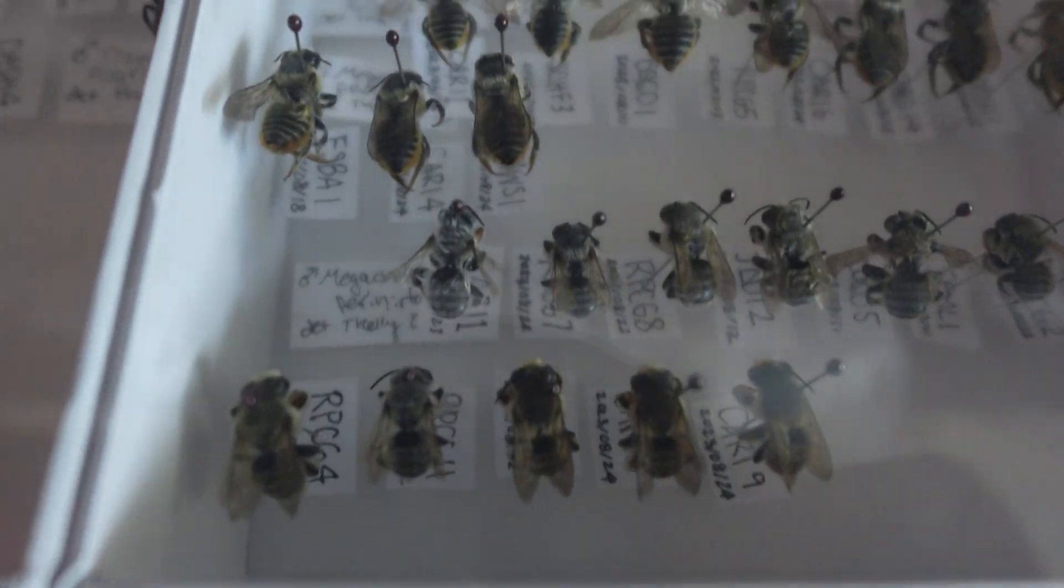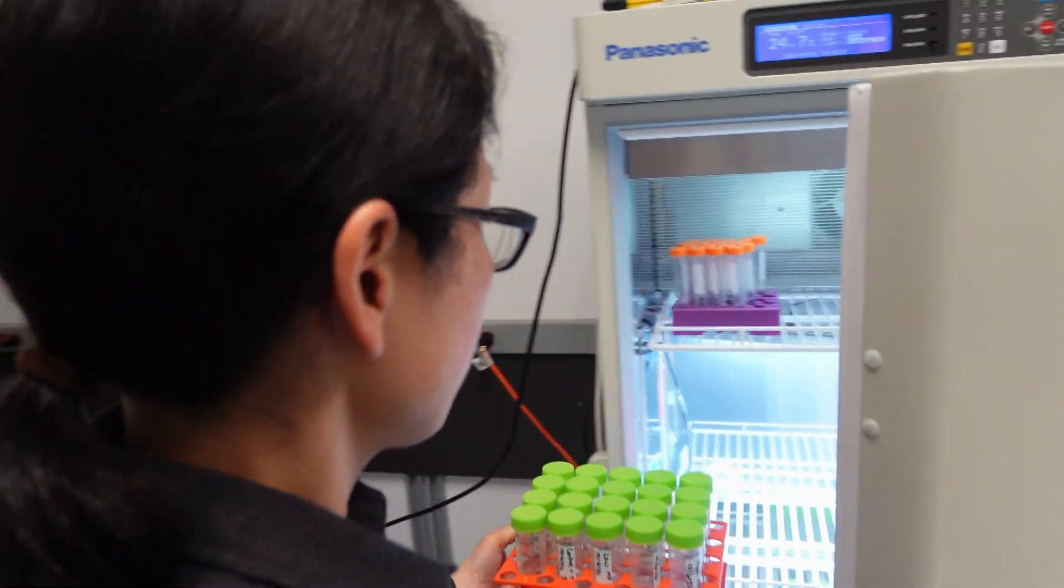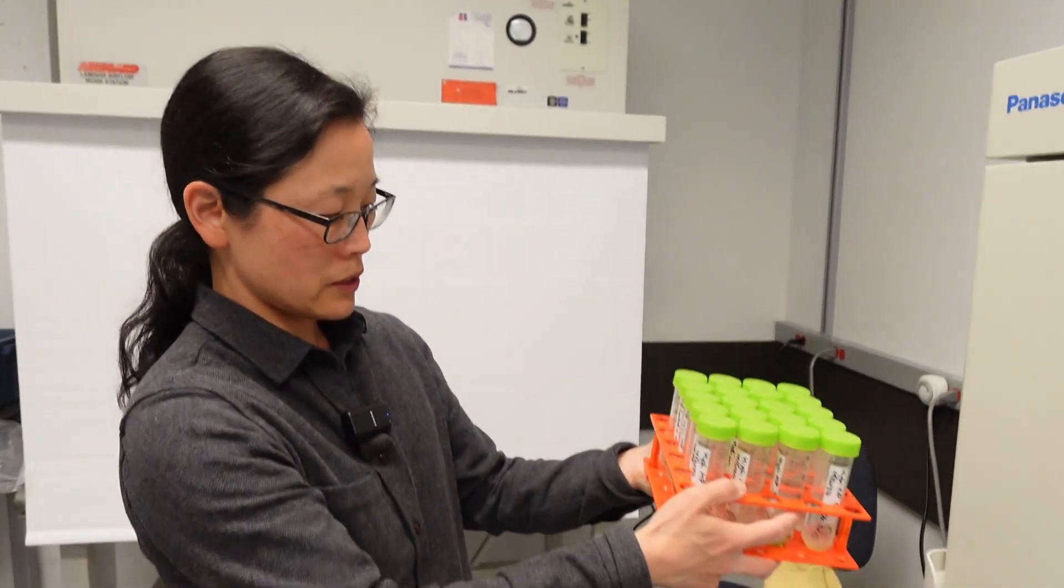One of the research questions we're really interested in right now is trying to figure out if insects all around the world are shrinking in response to climate change. We think insects might be doing that because when you grow them at warmer temperatures, they tend to turn into smaller size adults.